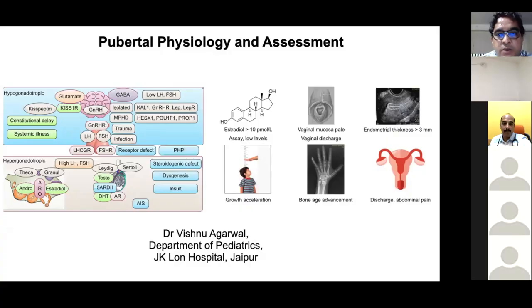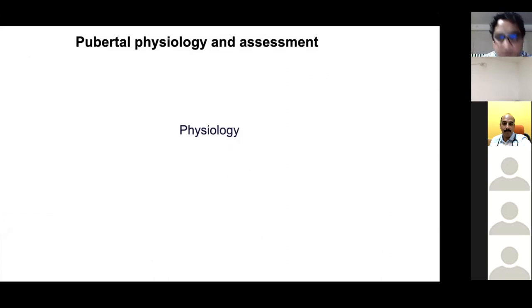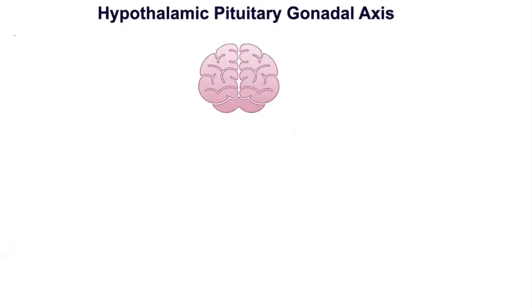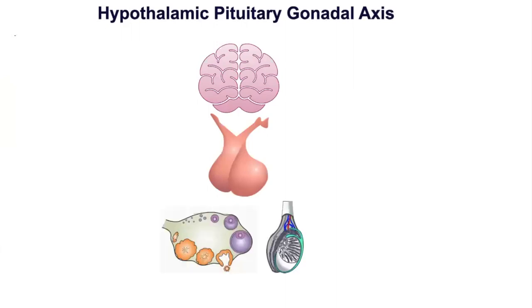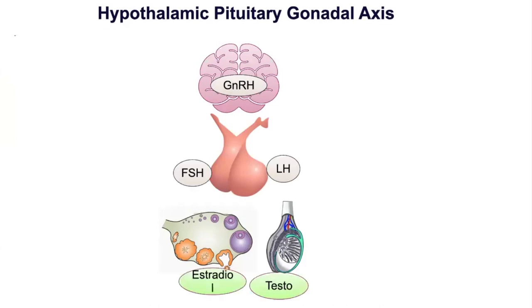Pubertal physiology is important to properly evaluate and manage children suffering from pubertal disorders. The hypothalamic-pituitary-gonadal (HPG) axis plays a crucial role in regulating the onset and progress of puberty. Three major organs — hypothalamus, pituitary, and gonads — are involved in the initiation, progression, and maintenance of puberty. Involvement of any of these three organs can lead to either delayed or precocious puberty.